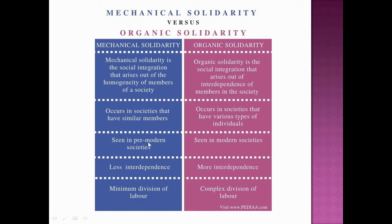The nature of society in mechanical solidarity corresponds to pre-modern or pre-industrial societies, while organic solidarity corresponds to modern industrial societies. In mechanical solidarity, society is segmented; in organic solidarity, society is organized. Mechanical solidarity societies have less population and lower density. Modern societies have more population and very high density. In simpler societies there is less interdependence, in modern societies there is more interdependence. Social bonds are very strong in traditional societies but comparatively weaker in modern industrial societies.